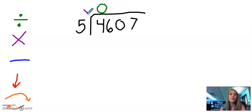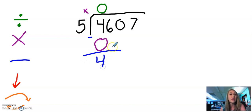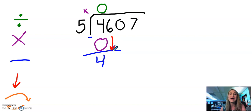Next, we need to multiply. We always multiply the number we put on top by the digit in our divisor. In this case, zero times five equals zero. Then we subtract: four minus zero equals four. We ask ourselves, is four less than five? It is, so we can move on to the next step, which says bring it on down. So we bring that six down, turning the four into a 46.